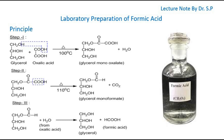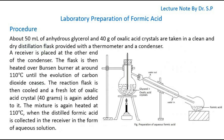This produces formic acid. For the procedure: about 50 ml of anhydrous glycerol and 40 grams of oxalic acid crystals are taken in a clean and dry distillation flask provided with a thermometer and a condenser.